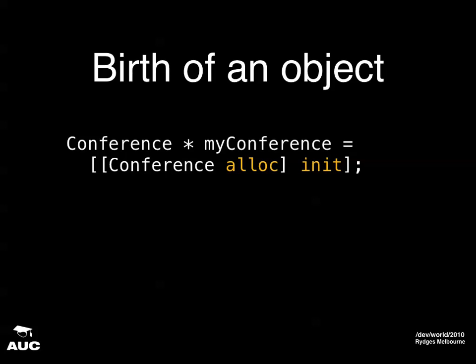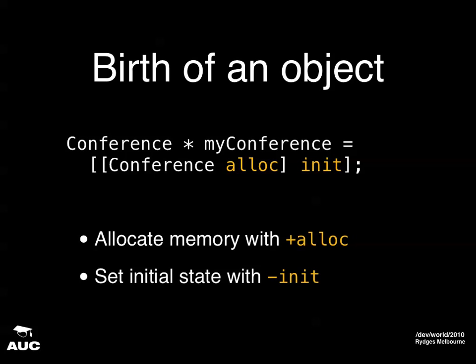Now let's look at the lifecycle of an object. The standard way of creating an Objective-C object is to get the class, send it the alloc message, and then send the result the init message. Alloc allocates memory for you and claims ownership of it; init sets the initial state, filling memory with zeros so any object pointers have the nil value. There's also the new method, which is equivalent to alloc followed by init, but it's not commonly used by experienced Cocoa programmers — splitting into the two steps of alloc and init is standard practice.